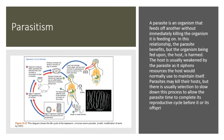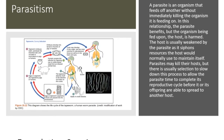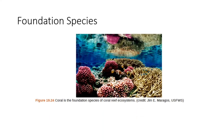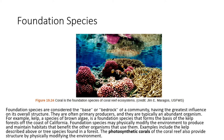Foundation species are considered the base or bedrock of a community, having the greatest influence on its overall structure. They are often primary producers and are typically an abundant organism. For example, kelp — a species of brown algae — is a foundation species that forms the basis of the kelp forests off the coast of California.